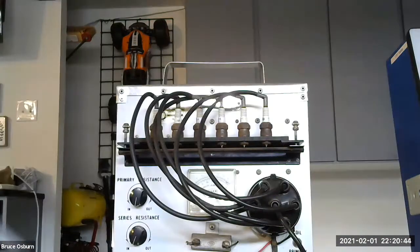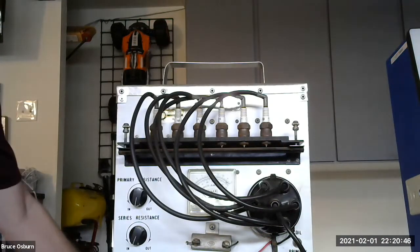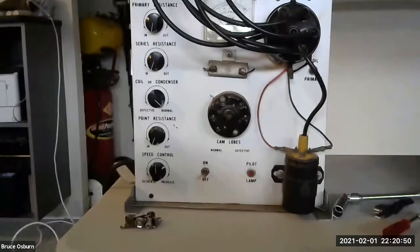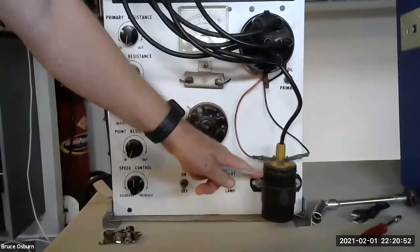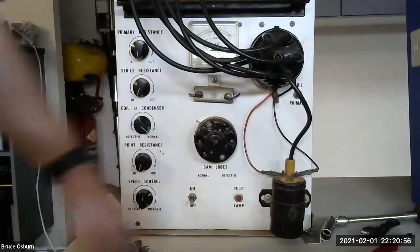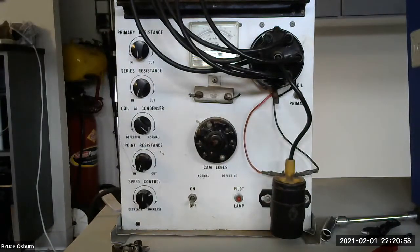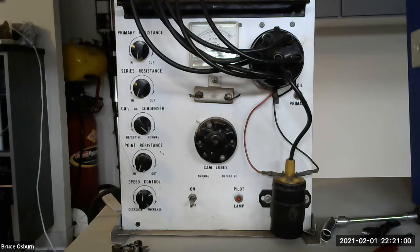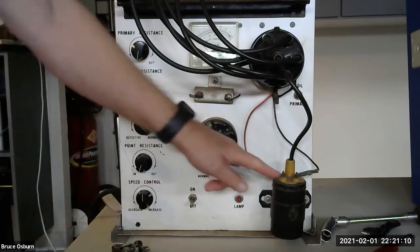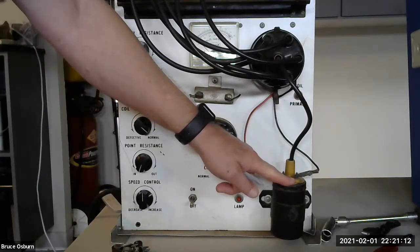So when we look at this ignition system, this coil right here is responsible for producing 150 ignitions, 150 high voltage spikes per second. Here's a second, 1,001. So in that amount of time, this little guy has to fire 150 times.